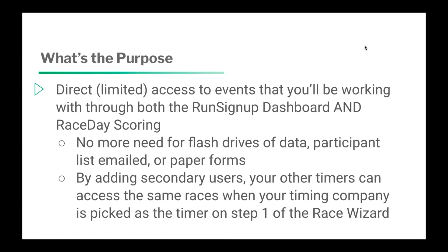The purpose is to have direct but limited access to events that you'll be working with, and this is through both the Run Signup Dashboard and Race Day Scoring. For those of you that have been getting flash drives or CSVs emailed, or even paper forms, there's no need for that anymore. In regards to data that is on Run Signup that you as the Timer need access to, having a Timer Account allows you to integrate into the back end of Run Signup and have limited access to that participant data. It'll give you most of the Race Day tools, and then a couple other items as well. You won't have access to things like financials, which as a Timer you shouldn't need.